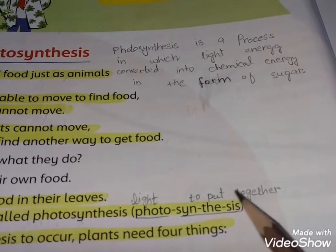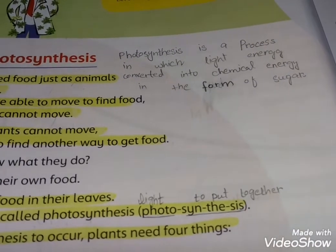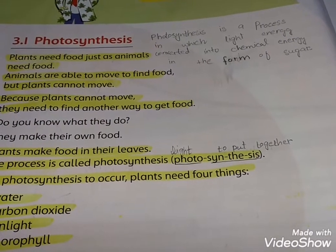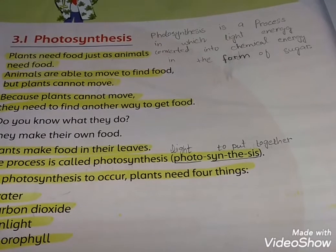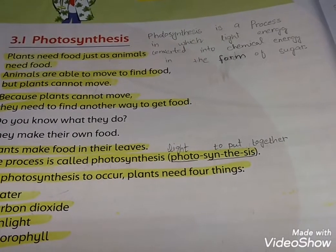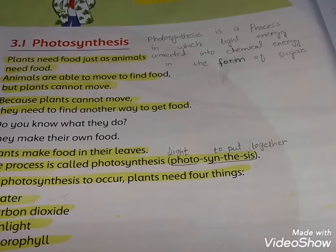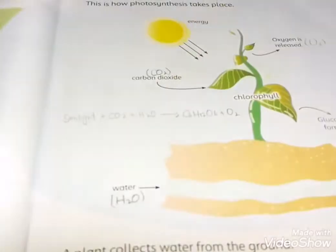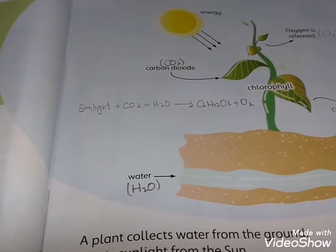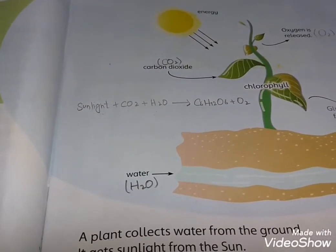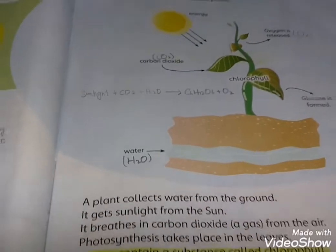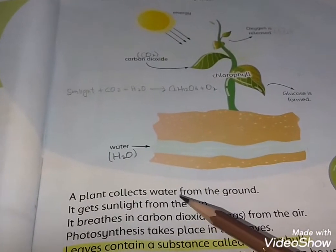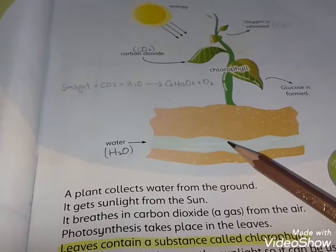For photosynthesis to occur, plants need four things: number one, water; carbon dioxide; sunlight; and chlorophyll. So students, here is a question — how does photosynthesis take place? A plant collects water from the ground.